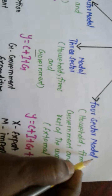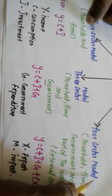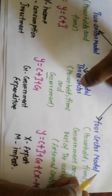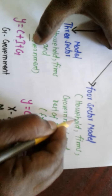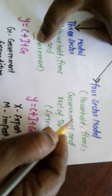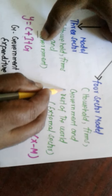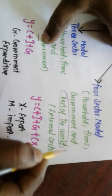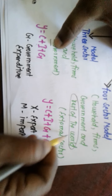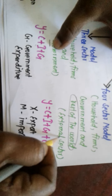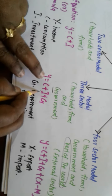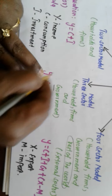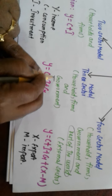To recap: two-sector model has household and firm; three-sector model has household, firm, and government. So four-sector model means household, firm, government, and the last one — rest of the world, also known as the external sector. The formulas so far: two-sector model is Y equals C plus I, and three-sector model is Y equals C plus I plus G.